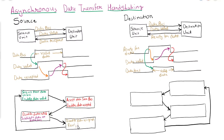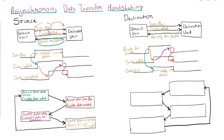To quickly revise: first, source will place data on the data bus, then it will inform the destination that there is valid data on the bus by enabling data valid. As soon as destination gets that signal from the source, it will accept the data and start reading from the data bus, then acknowledge the source by enabling data accepted.